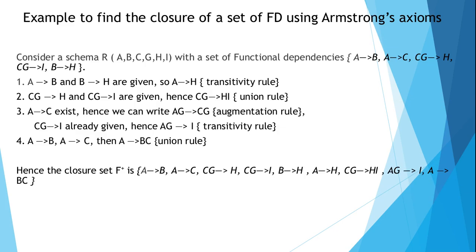We will now see an example to find the closure of a set of functional dependencies using Armstrong's axioms. Such questions are frequently asked in university examinations, so you have to try these examples. Consider a schema R with attributes and a set of functional dependencies: a to b, a to c, cg to h, cg to i, and b to h.